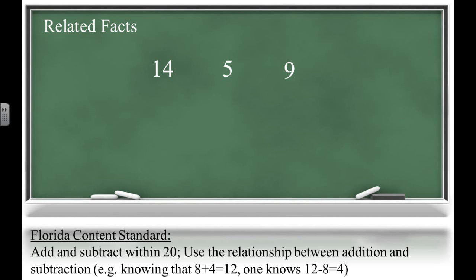For instance, thinking about addition, what relationships do you see among these numbers? We can make two related addition equations, which illustrate the commutative property. The commutative property states that the addends can be added in any order and will result in the same sum.